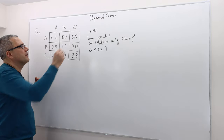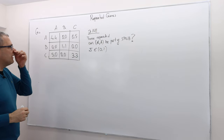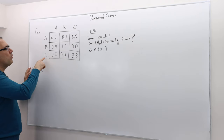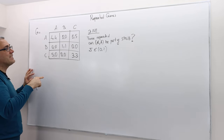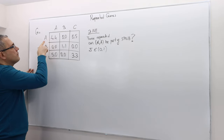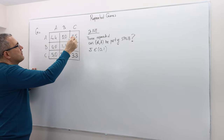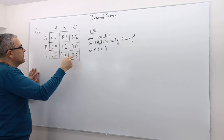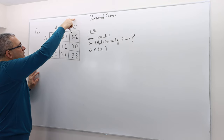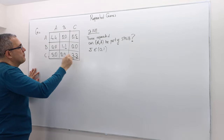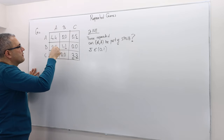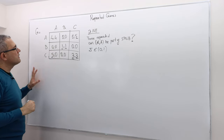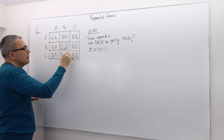What are the Nash equilibria of this game? There are three. The first one is a pure strategy Nash equilibrium. Given player one plays A, the best response is C. If they're playing B, best response is B. If they're playing C, best response is C. Similarly, if player two is playing C, best response is C. If player two is playing B, best response is B. And if playing A, best response is C. So there are two pure strategy Nash equilibria.